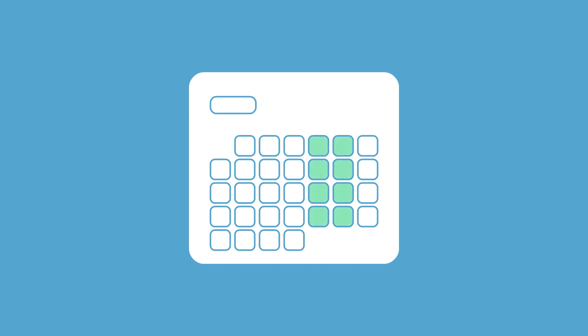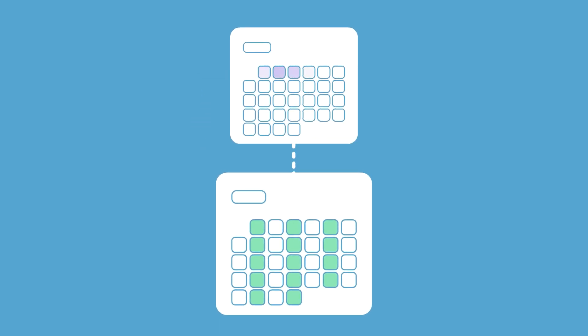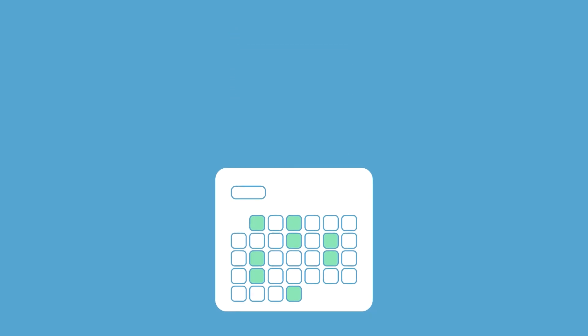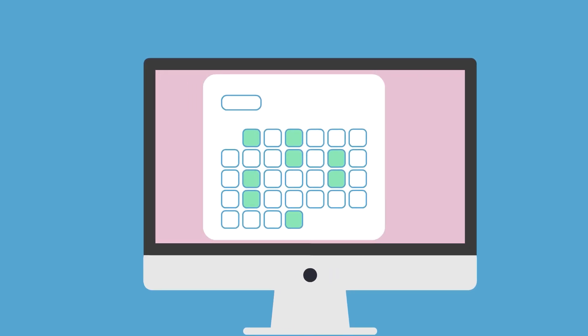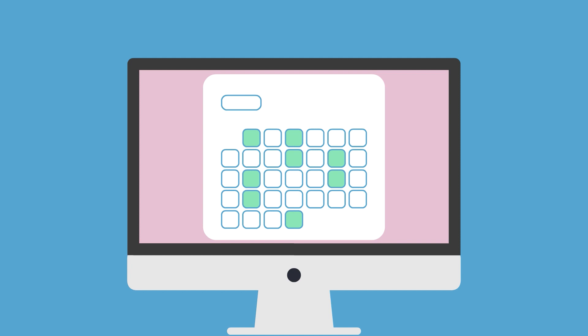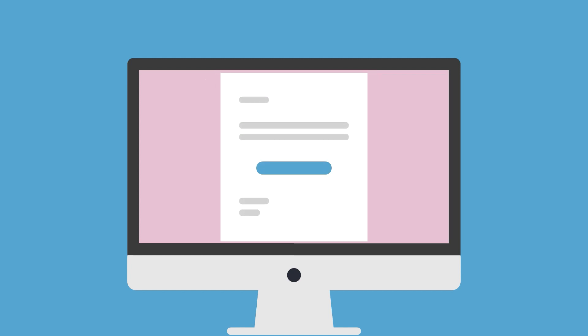The Dubsado Scheduler allows you to set your general availability for a particular type of appointment, like a consultation call. Dubsado takes this availability, cross-checks it with conflicts from any external calendar you've connected, and identifies available appointment slots where someone could book with you. You can embed a calendar on your website that shows your open appointments, or you can share a link to this calendar via email.